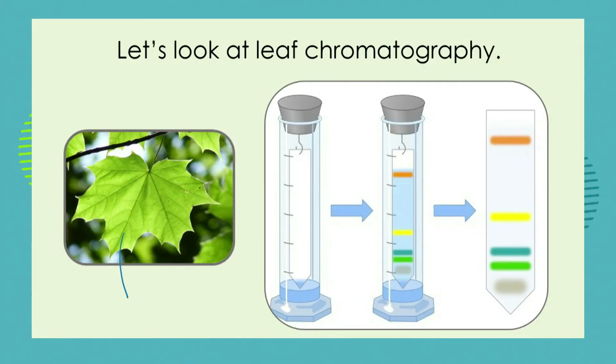When you get to high school, you'll find you can do chromatography on leaves and separate their pigments. What looks like a single green pigment turns out — after chromatography — to be different kinds of chlorophylls, as well as other pigments such as xanthophylls and carotenes, which are yellow and orange. So green leaves are actually mixtures of other dyes and pigments.